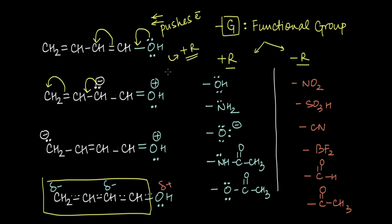Now that you know what +R means, what is the necessary condition for a group to be +R? A +R group needs to have at least one lone pair of electrons that it can push into the system via resonance. Looking at all these groups — including the amide and ester groups — each one has at least one lone pair that can be pushed into a double-bonded system, so all of these act as +R groups.